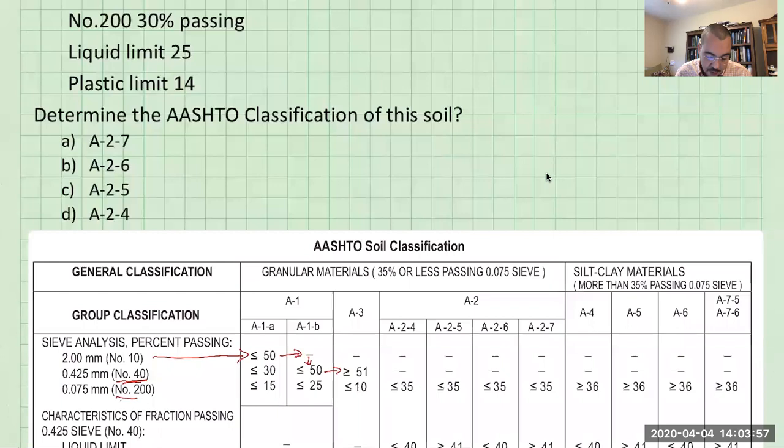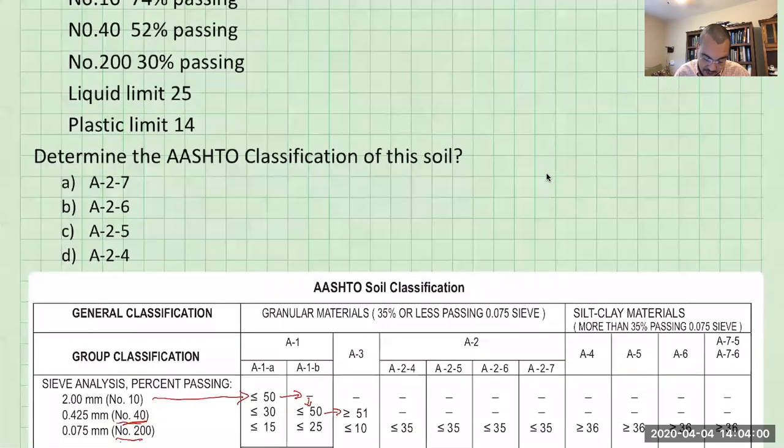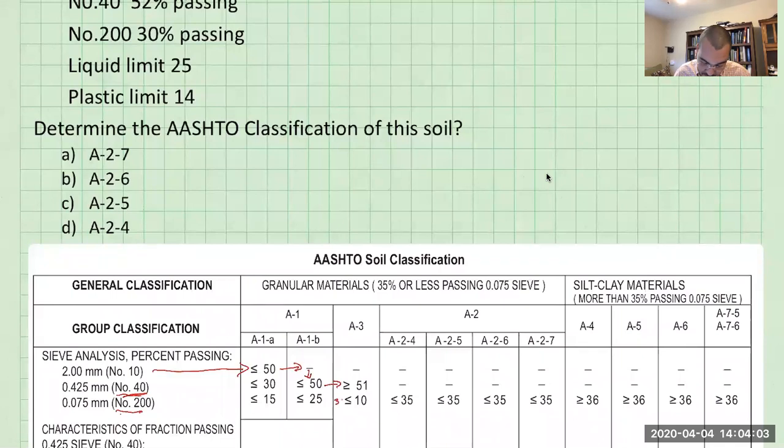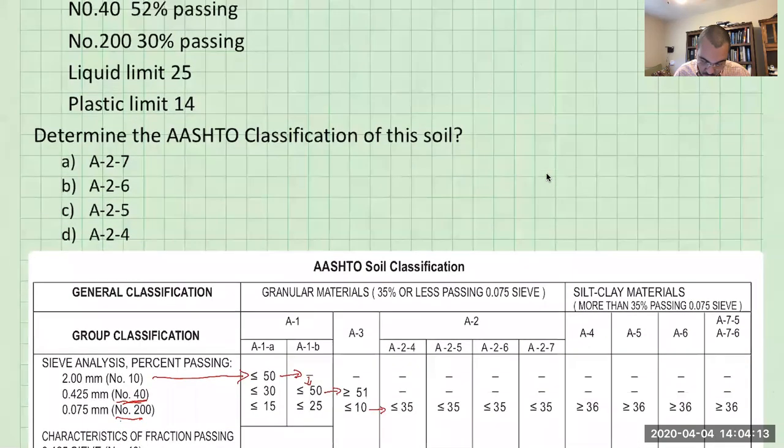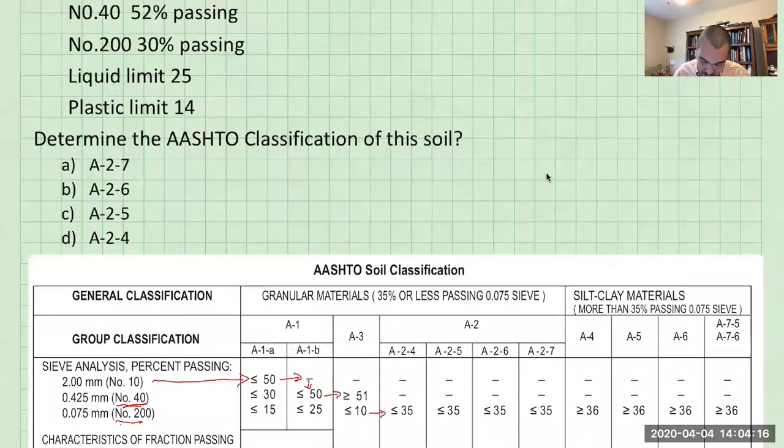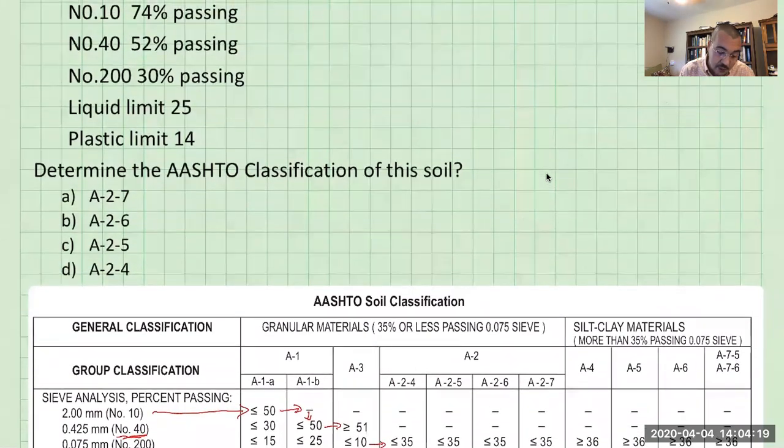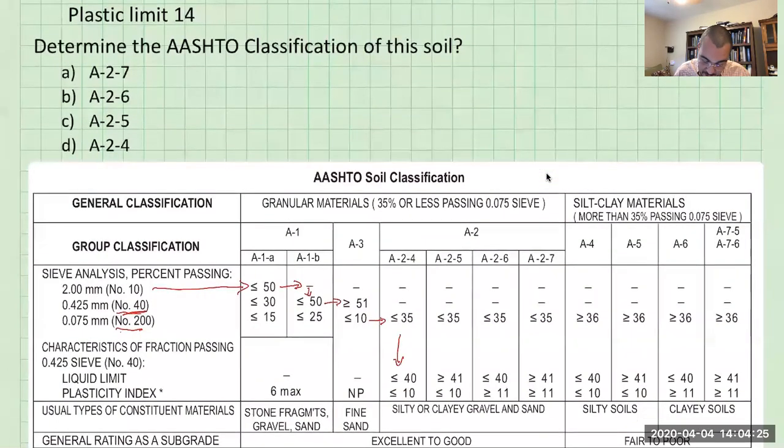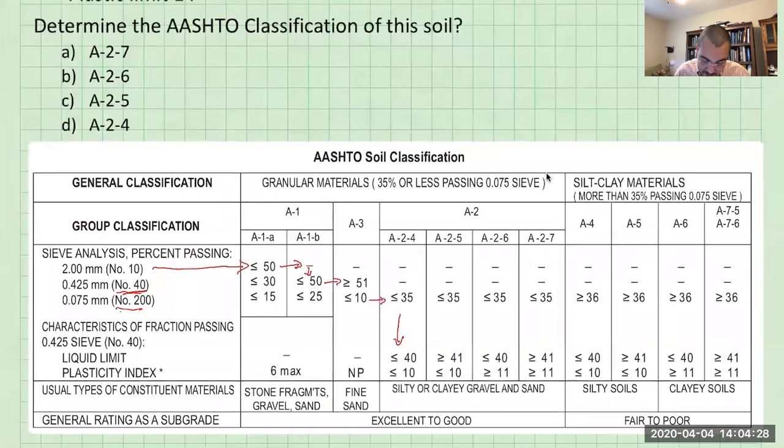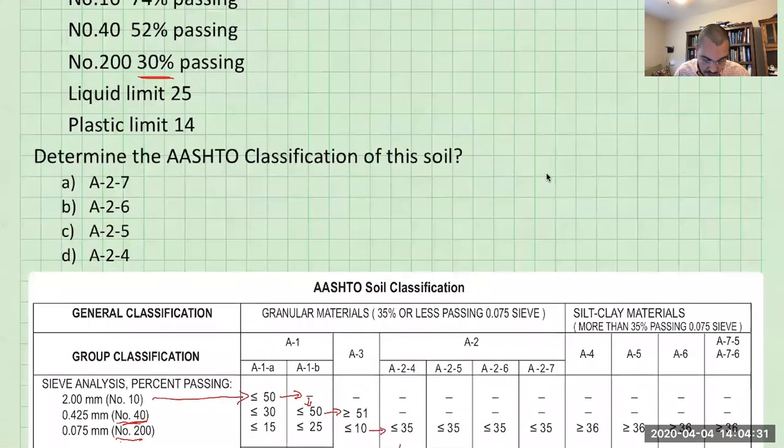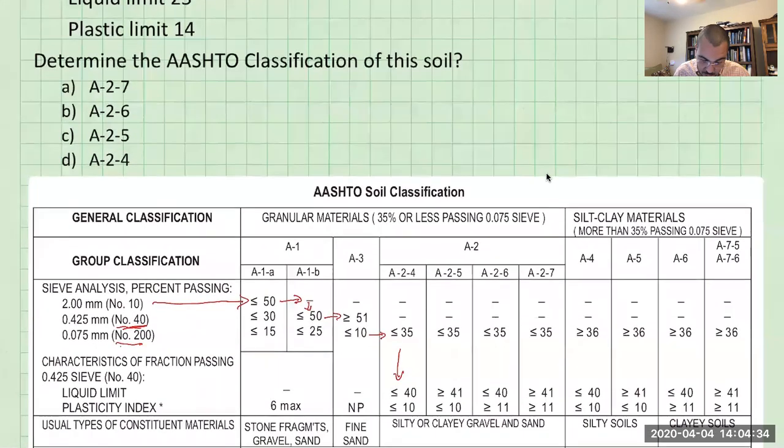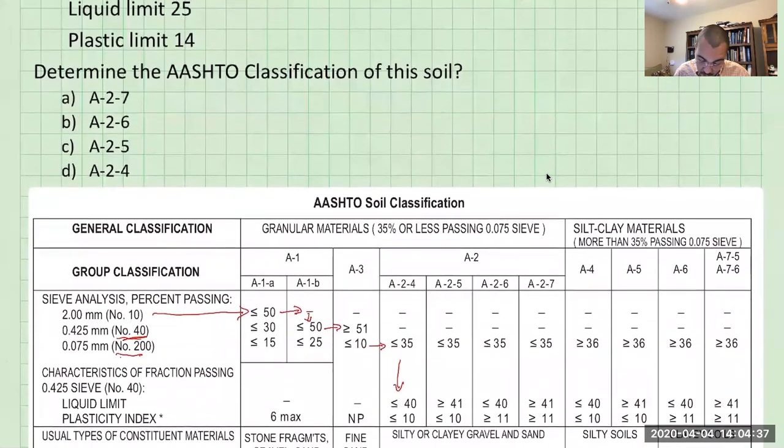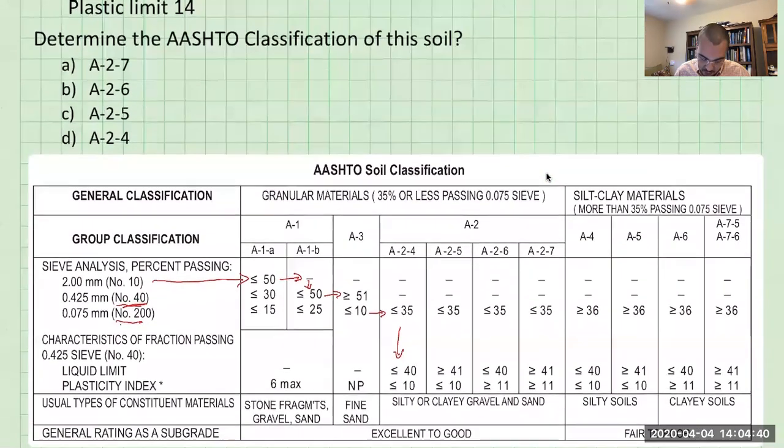Now we take a look at the number 200 sieve. What is passing that? We have 30 percent. So 30 percent over here, that doesn't apply, right? That's greater than 10. So what do we have to do? We have to move over. Now we have 35 percent. So 35 percent is greater than what we are given, the 30. So we keep going down now and we check the liquid limit. Liquid limit is 40. So what is our liquid limit? It's 25. So 25 is less than or equal to 40. So that's good. We keep going down.